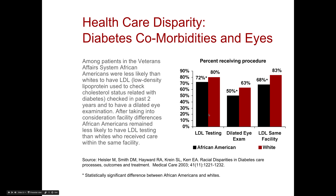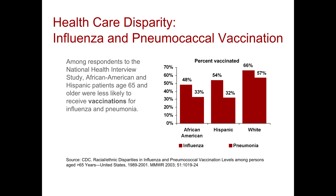This didn't just account for type of facility — within a facility there was actually a slightly larger gap in terms of disparities for care. Among respondents to the National Health Interview Survey, African American and Hispanic patients age 65 and older were less likely to receive vaccinations for the flu and pneumonia, which we know can prevent death, particularly in that population which is highly susceptible to complications.